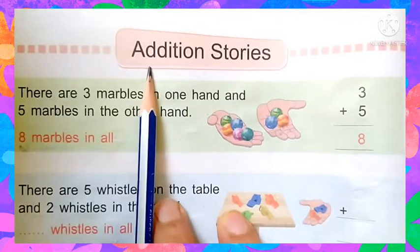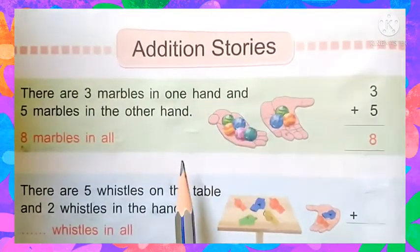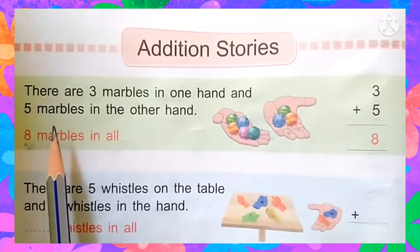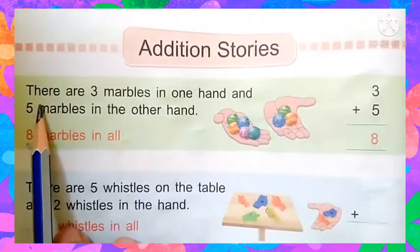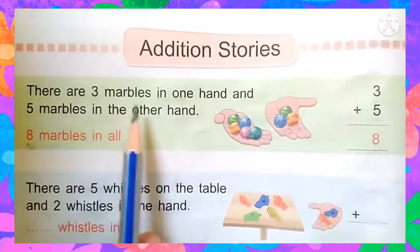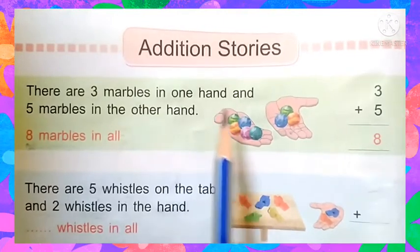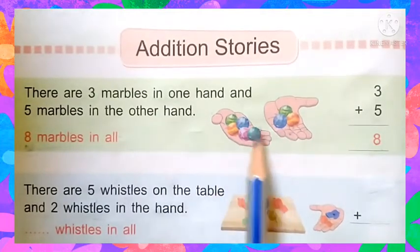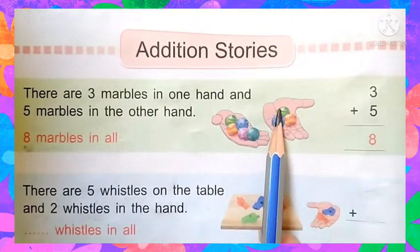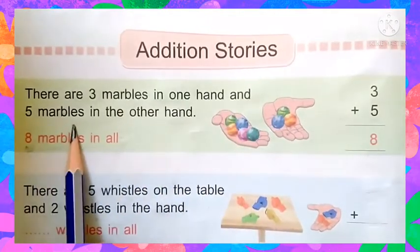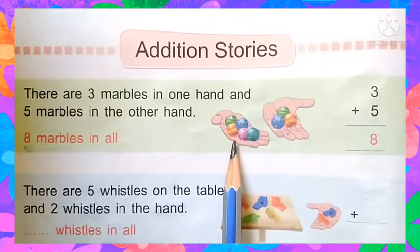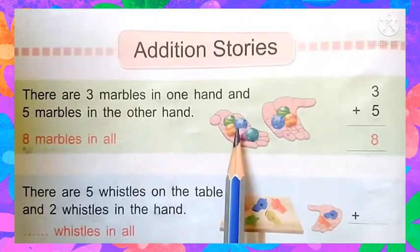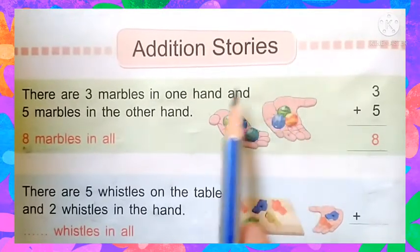Children, in this page we will do addition stories. Addition stories means word problems also. You will understand with this example how to do a word problem. Look at this — there are three marbles in one hand. There are two hands. In one hand there are three marbles: one, two, three. And five marbles in the other hand — one, two, three, four, and five. How many marbles are there altogether?